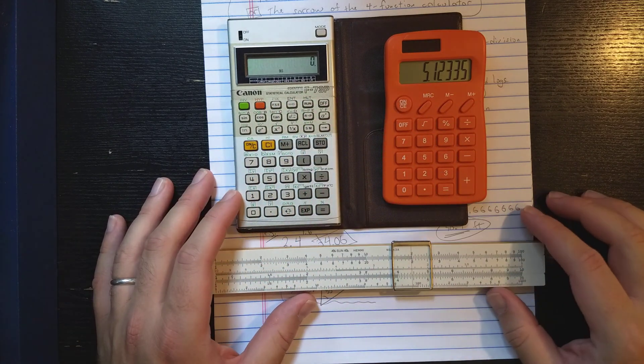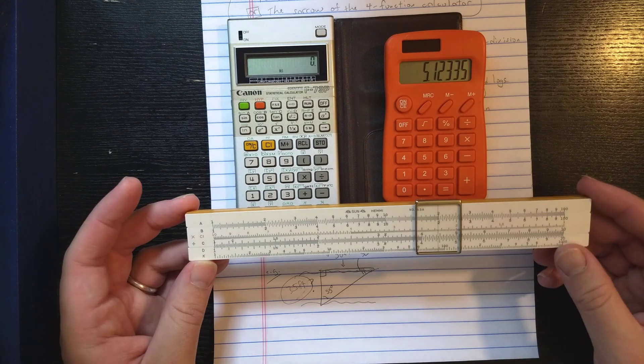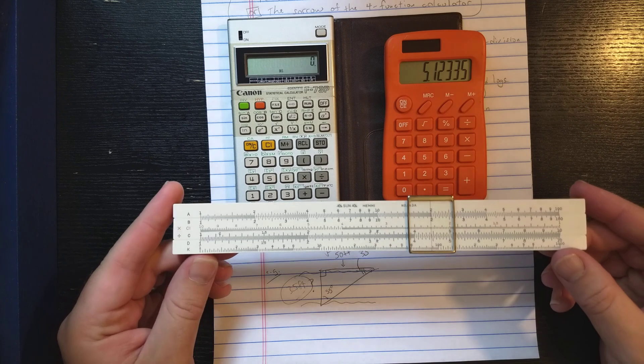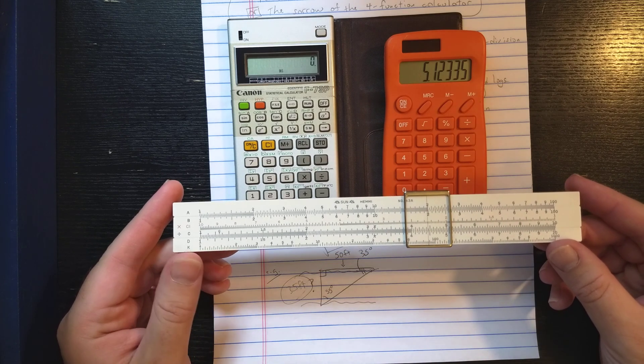Will I ever be able to understand all those functions and what they do, right? Whereas understanding the small number of scales on this slide rule is maybe something that you believe you could do, right?